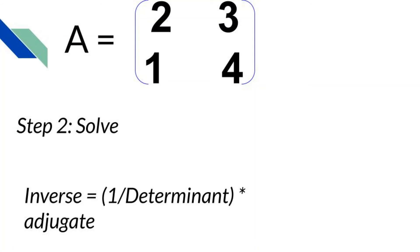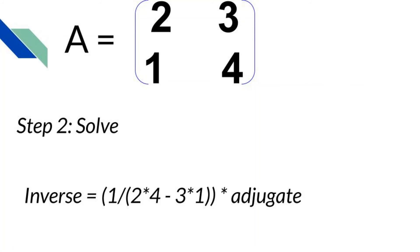The formula tells us to multiply the adjugate by 1 divided by the determinant. Let's plug in the determinant. Remember, just subtract the product of the second diagonal from the first.